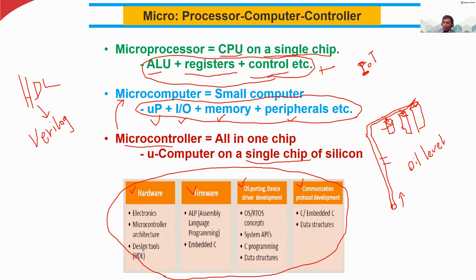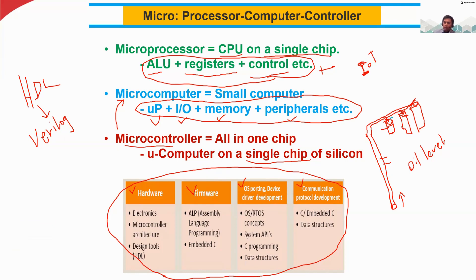For automation, we need microcontrollers or PLCs — programmable logic controllers — and we program everything. We put a sensor on the tank, and when the oil level reaches about 90% of the tank, the sensor sends data. The microcontroller is programmed so that when tank number one reaches that level, it closes that valve and opens the valve to the next tank.